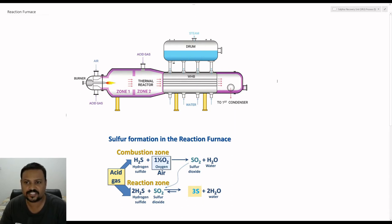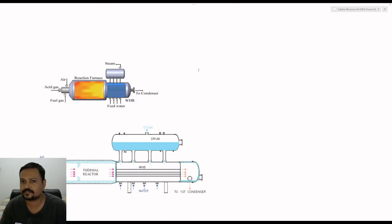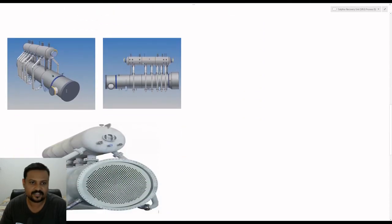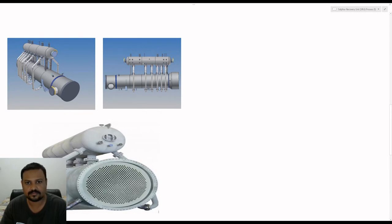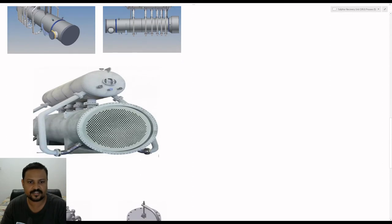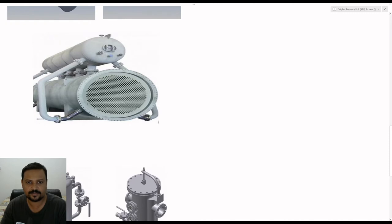Here are some pictures of the plant for better understanding. This is the waste heat boiler with an integrated steam drum. You can see the risers and the downcomers, the tube side and the tube sheet of the waste heat boiler.